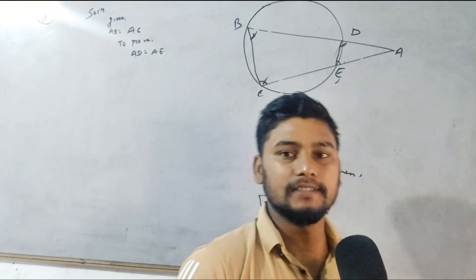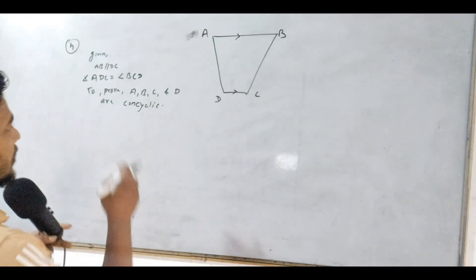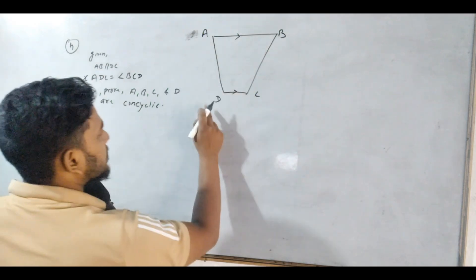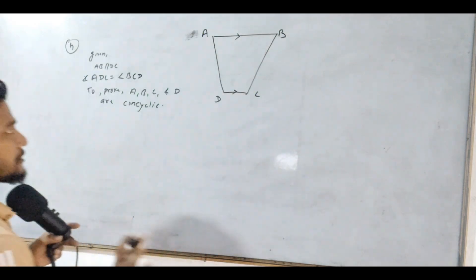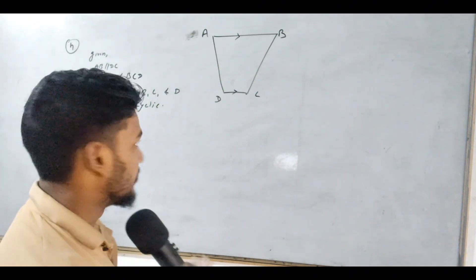This is the concept. This is the statement, so you can make it. What do we say? AB and DC are parallel.